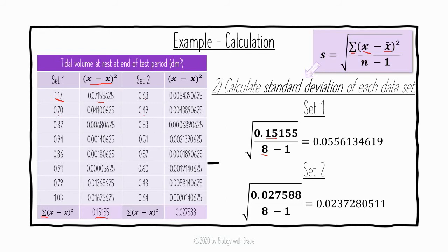Using that sum, we calculate the square root of 0.15155 divided by 8 minus 1, which gives a standard deviation for set one of 0.0556134619 — you can round this to 0.06. For set two, doing the same process gives a sum of (x minus mean) squared of 0.027588, and then the square root of 0.027588 divided by 7 gives a standard deviation for set two of 0.0237280511, which rounds to 0.02.